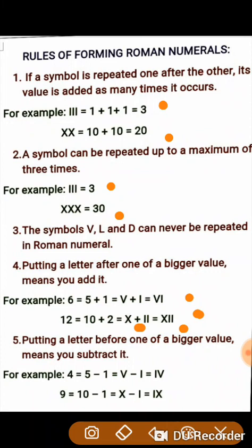Rule number 5 says putting a letter before one of bigger value means you subtract it. For example, 4 cannot be written as 4 times I because a symbol can be repeated maximum 3 times. So 4 is introduced as 5 minus 1. Since there is a minus sign, I is written before V, making it IV. Similarly, 9 is 10 minus 1, and since there is a minus sign, I is written before X, giving IX.